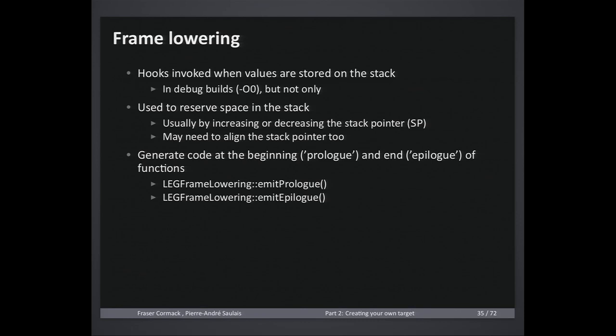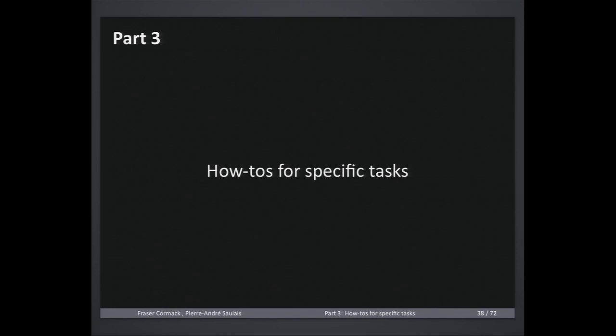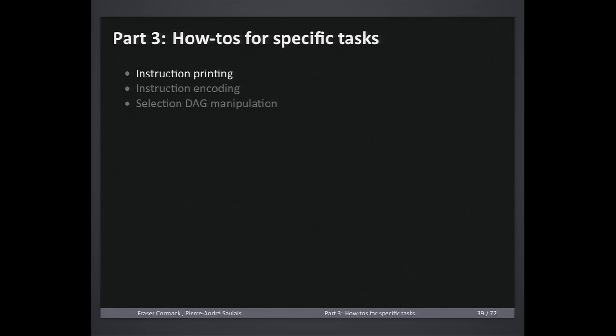Up until now we've been working with the internals of our compiler. Now what we really want is to get some output from it. I'll help you through that now, first by going through instruction printing and then encoding. To implement instruction printing for the Leg backend there are a few classes we need to implement. The important note is that this stage works at an even lower level called MCInst — machine code instructions. The Leg ASM printer takes our machine instructions, lowers them via MCInstLowerer, and passes them to a streamer — either an ASM streamer for assembly or an object streamer for binary encoding.